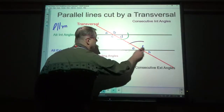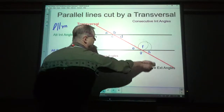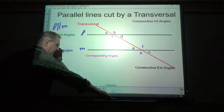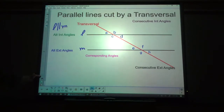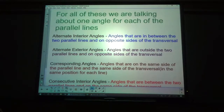So one from one group and one from the other, not two from the same group. Now that we've talked about that, let's get to the definitions, and then I'll come back to the screen and show you all the different pairs. For all these, we're talking about one angle for each of the parallel lines.